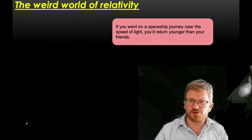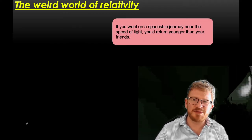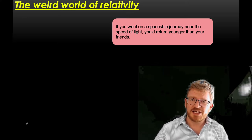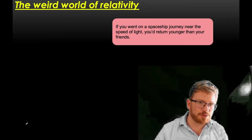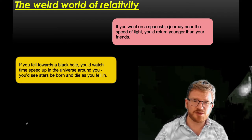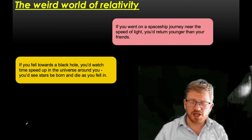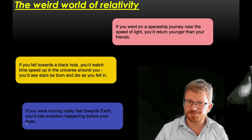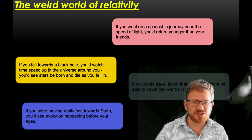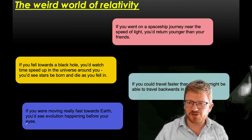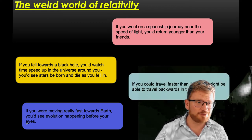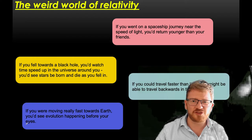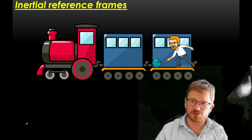We're going to start thinking about the weird world of relativity — things you may have heard of in the media or in the film Interstellar. If you're on a spaceship journey near the speed of light and leave people on Earth, you'll actually be younger than them when you land. If you fell toward a black hole, you'd watch stars born and die as you fell in. Lengths get longer and shorter — very strange things happen as a result of this.